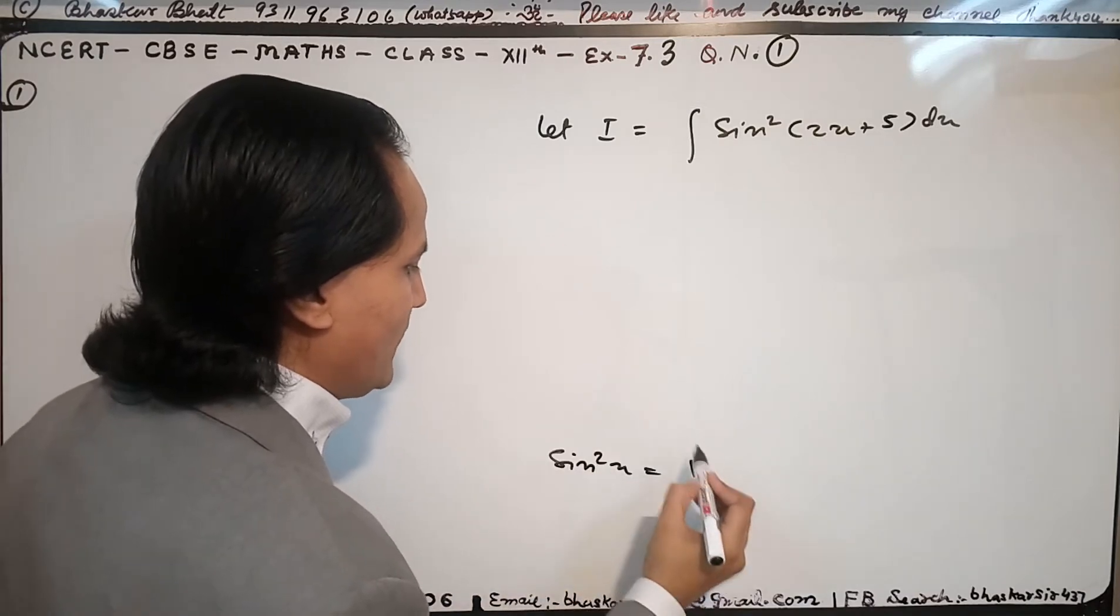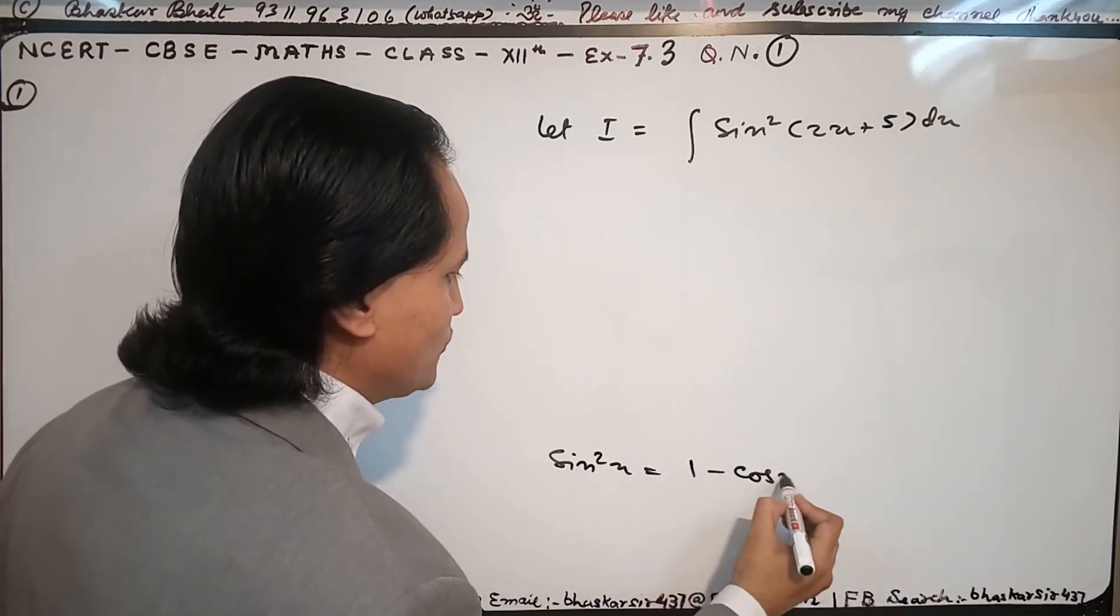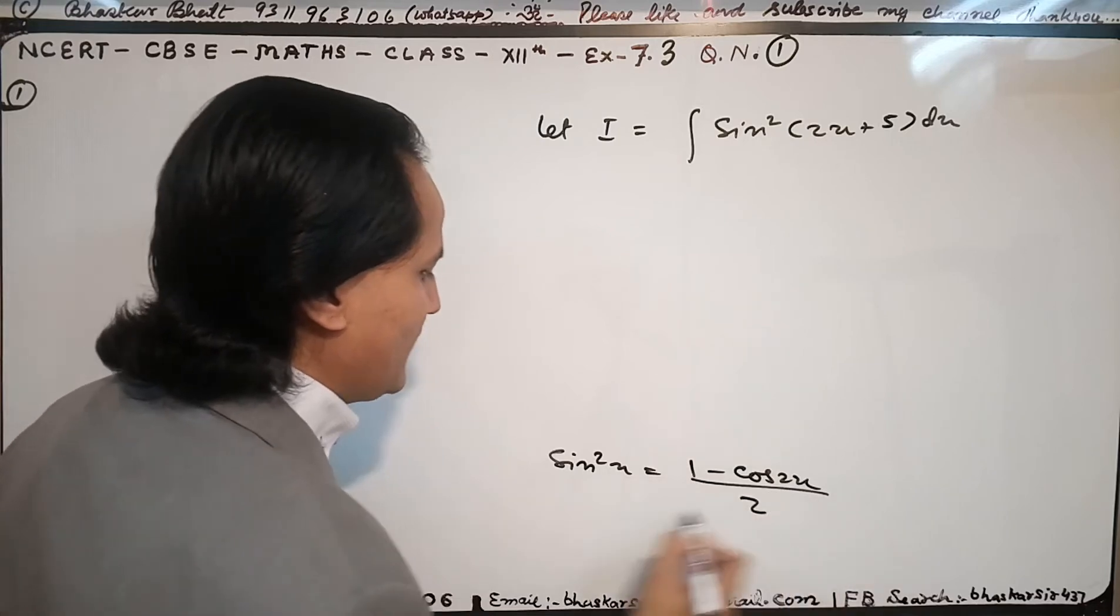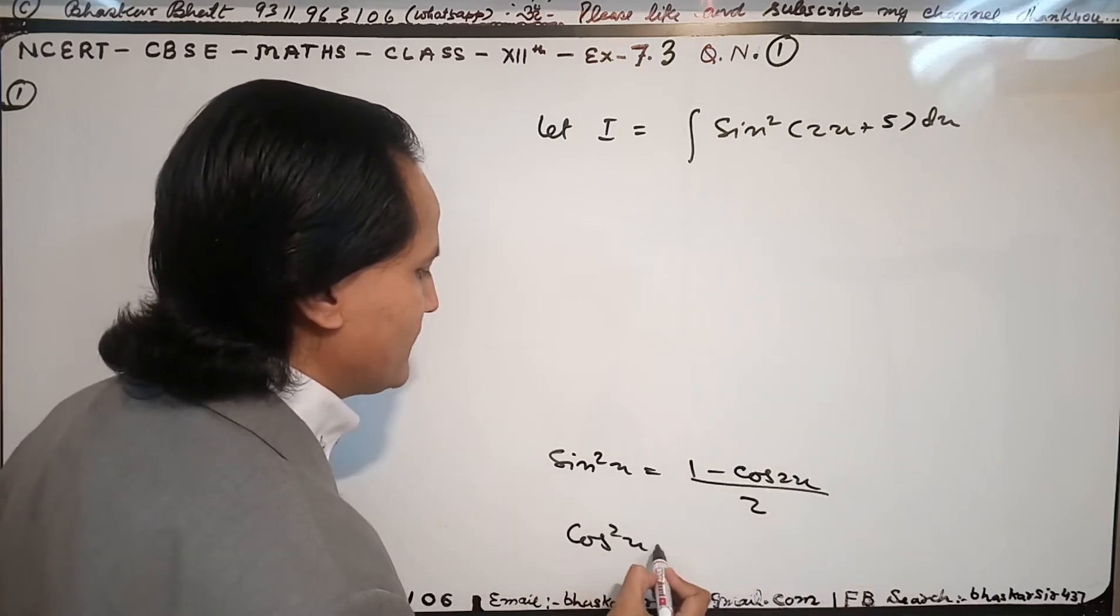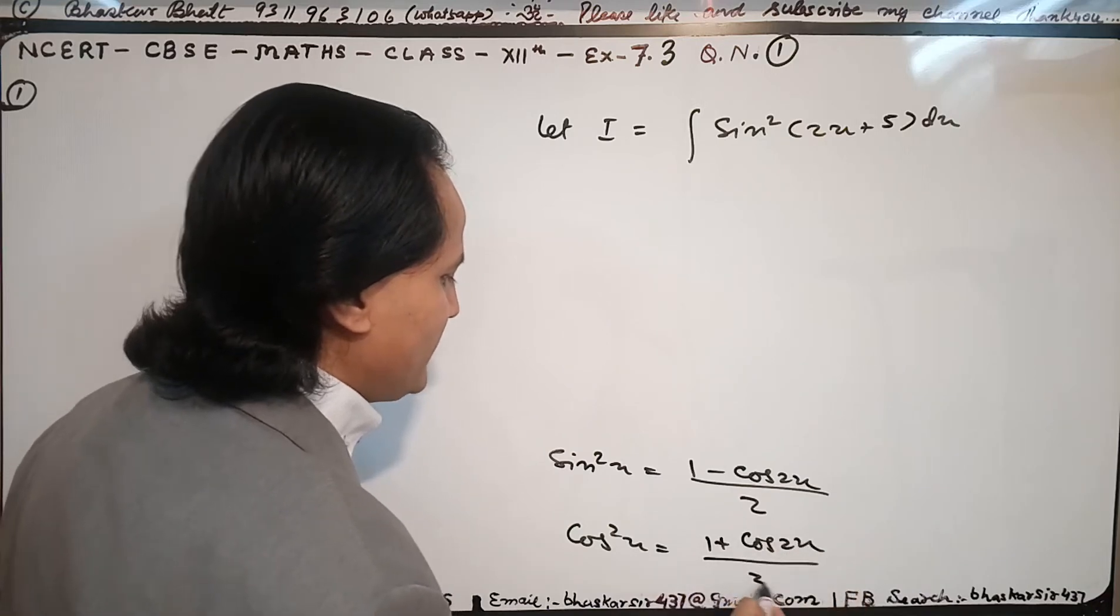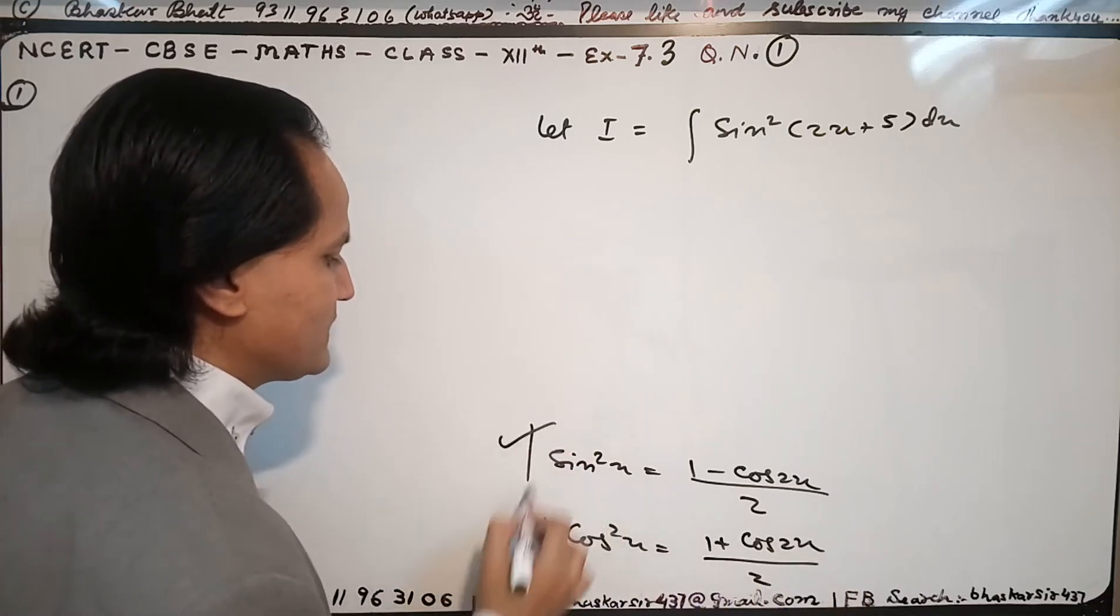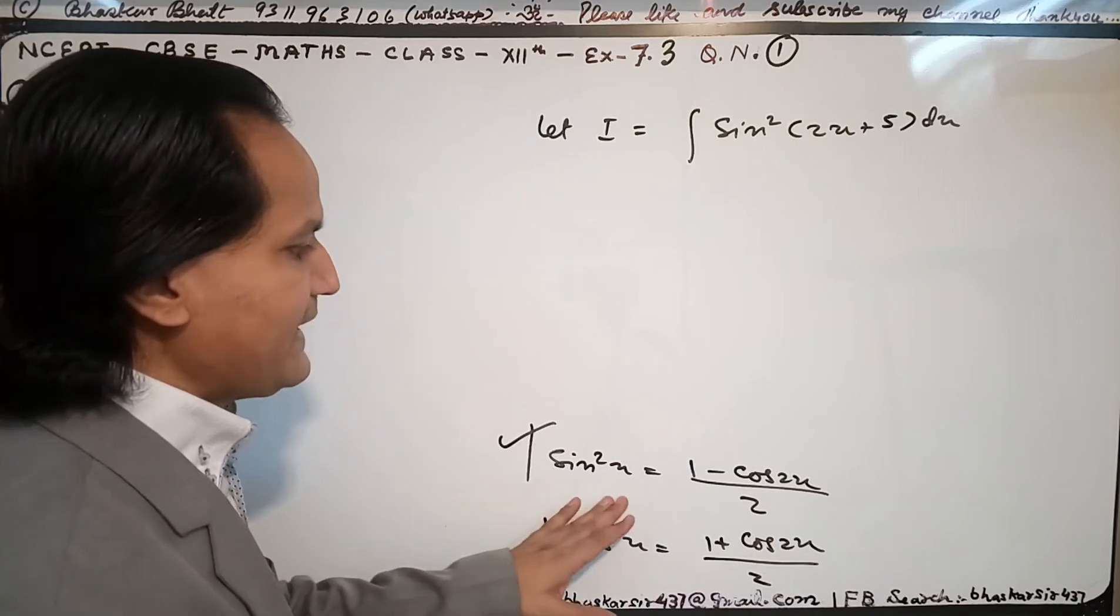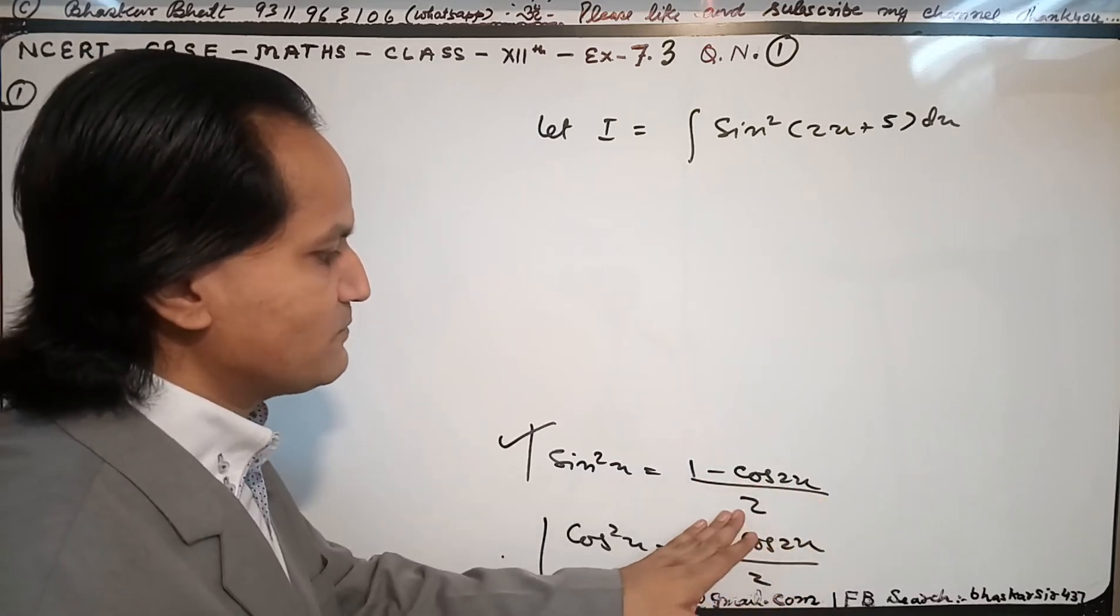equals (1 - cos 2x)/2, and cos square x equals (1 + cos 2x)/2. Here in this question I will use the first formula: sine square x = (1 - cos 2x)/2.